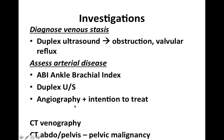Angiography is useful for arterial disease with an intention to treat, such as balloon angioplasty. For venous assessment, a CT venography or CT abdomen-pelvis can look for pelvic malignancy. However, these are only indicated when duplex ultrasound and previous investigations yield no useful findings.